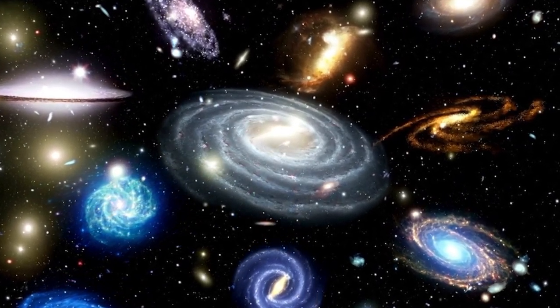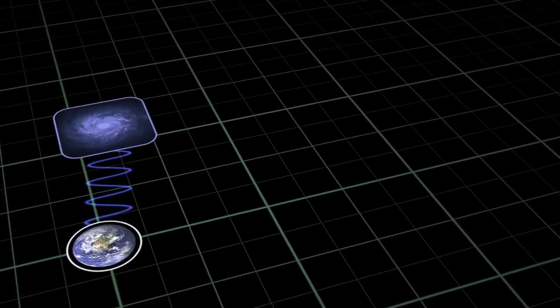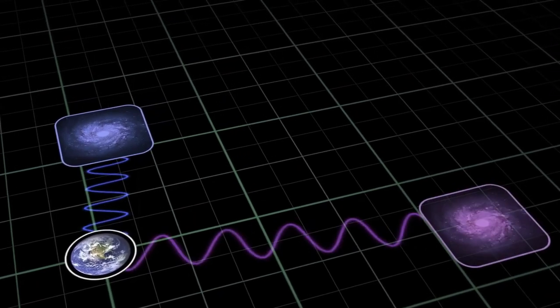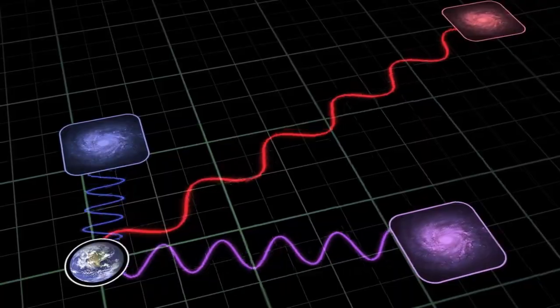To gauge the distance of a galaxy from Earth, astronomers rely on a fundamental tool known as cosmological redshift. This redshift is a phenomenon resulting from the expansion of the universe, causing light waves to stretch as galaxies move away from each other.